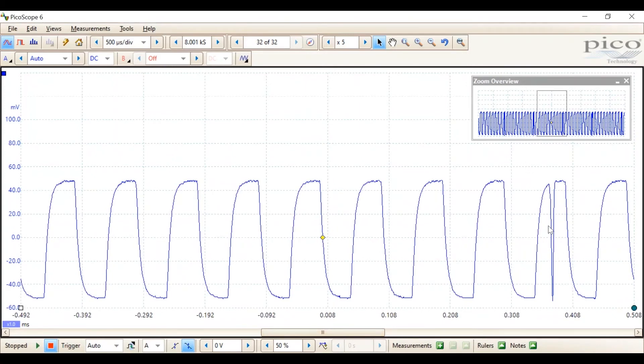Like so. And although we can see a glitch here, we're not going to concern ourselves with that. We're going to use this to show the triggering. So, to measure the width of a single pulse, I'm going to drag rulers from this box in the bottom left-hand corner.